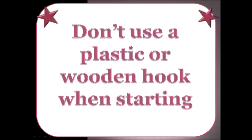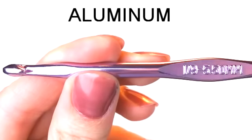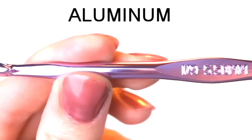Now on the type of hook, I don't recommend starting out with a plastic or a wooden hook. The yarn doesn't glide well. So what I do recommend is an aluminum hook. This type of hook is light, and it is much easier to use when first starting out. It's also very inexpensive.